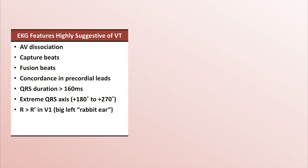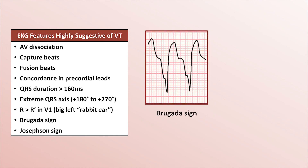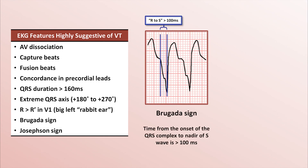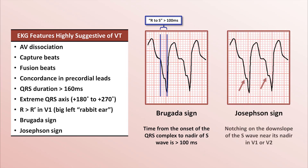Two final features are Brugada sign and Josephson sign, both of which are demonstrated here. Brugada sign is when the time from the onset of the QRS complex to the nadir of the S wave — known as the R to S duration — is over 100 milliseconds. Josephson sign is notching on the downslope of the S wave near its nadir in V1 or V2.